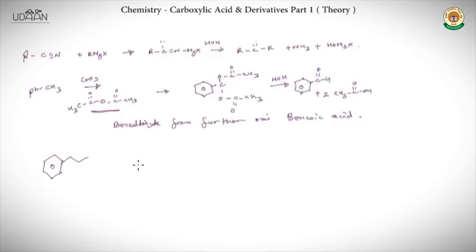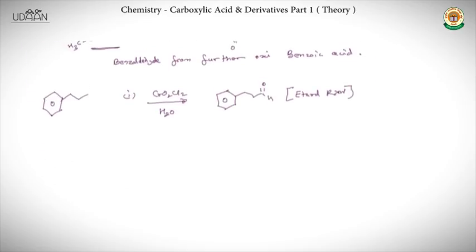One more important reaction: whenever we have benzene and if we use CrO2Cl2 with an anhydride, then followed by hydrolysis we will get an aldehyde. This reaction is known as Gattermann reaction. An important point to note is that aldehydes and ketones have low melting and boiling point than alcohols because they don't have hydrogen bonding.